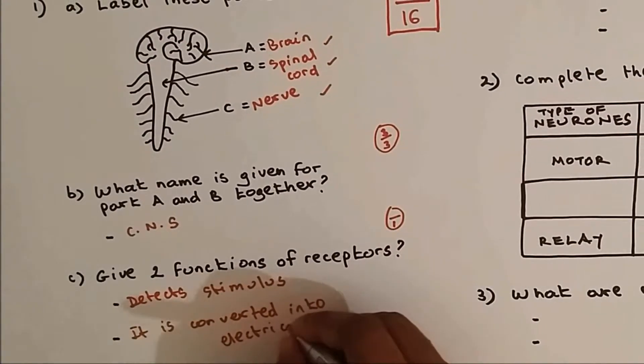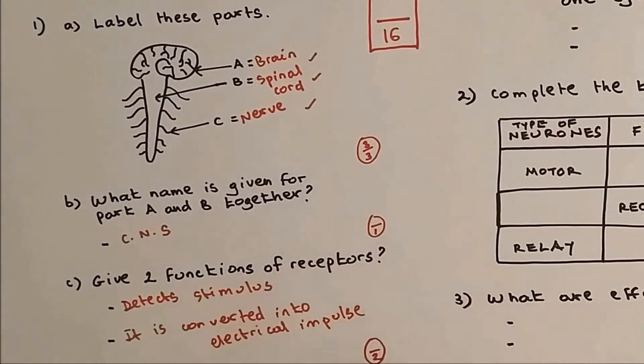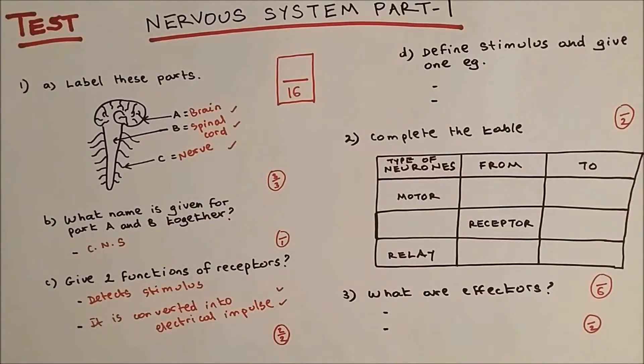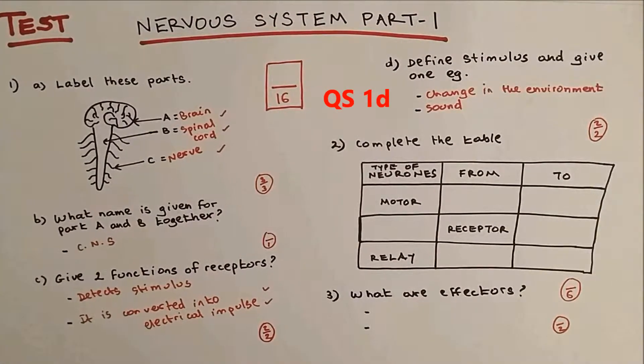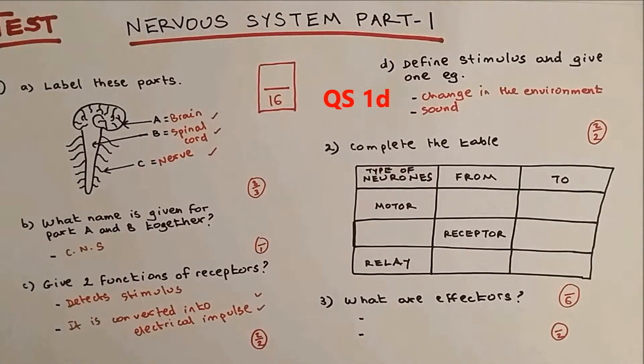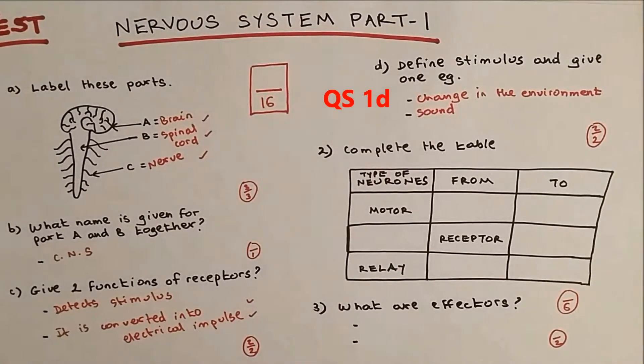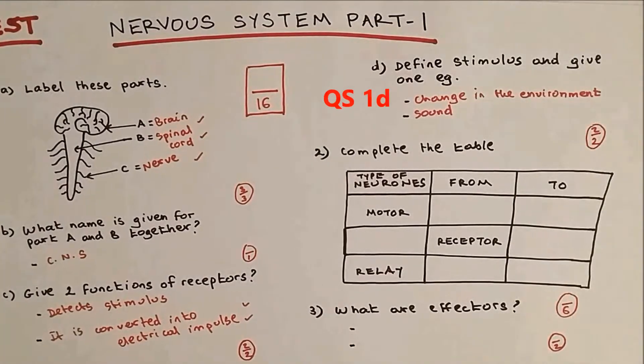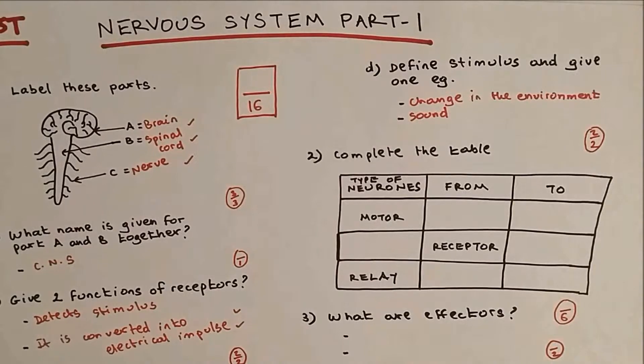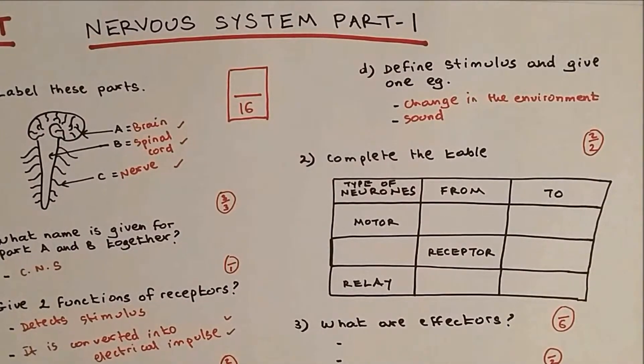Question D: define stimulus and give one example. Stimulus is a change in the environment and there are many examples you could give. One of them: heat, light, pressure, sound. I'm going for the easy one, I'm putting sound. Two marks, two out of two.